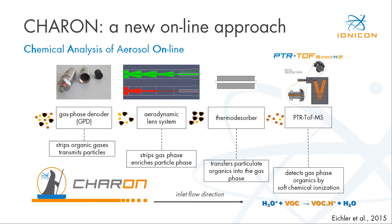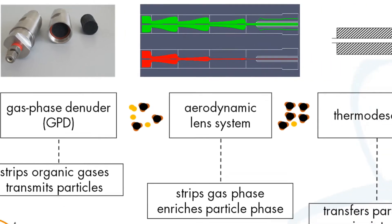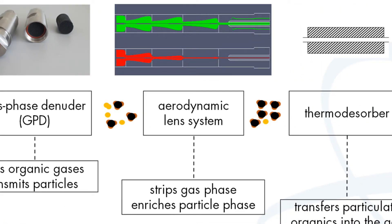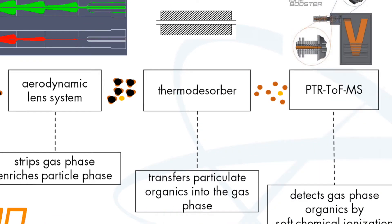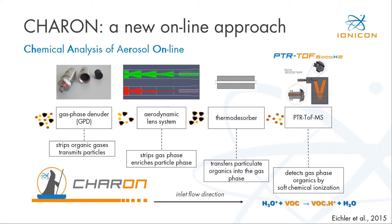Caron-PTR-MS basically consists of four parts. Our gas phase denuder on the left side efficiently absorbs organic gases but transmits particles. These particles are then enriched and subsampled by an aerodynamic lens system. A thermodissolver transfers the particulate organics plus ammonium to the gas phase. And finally, a PTR-TOF-MS analyzes these gas phase organics by soft chemical ionization with hydronium ions.